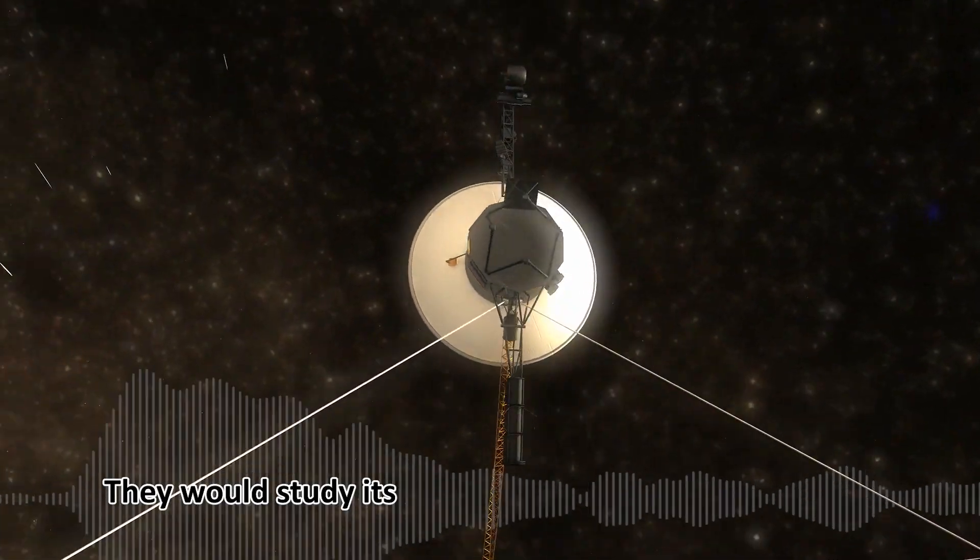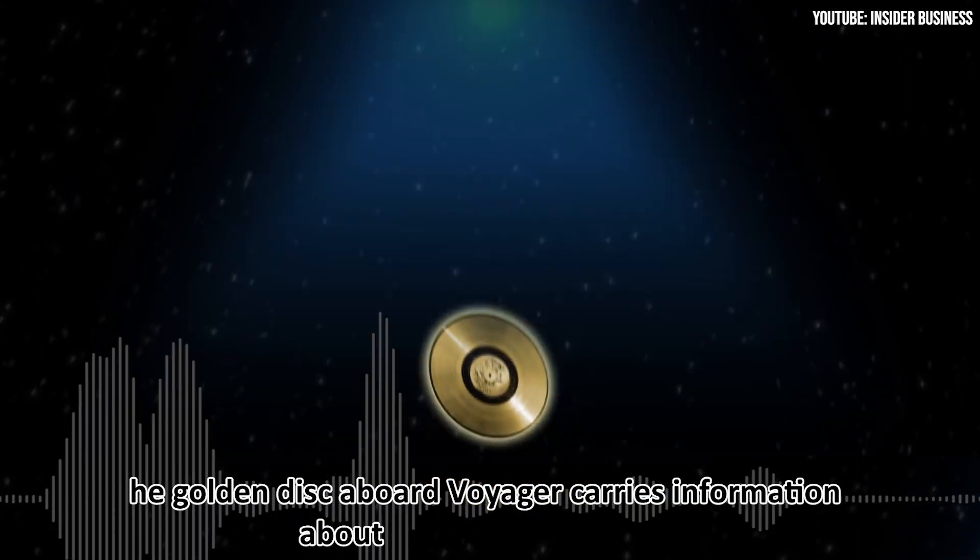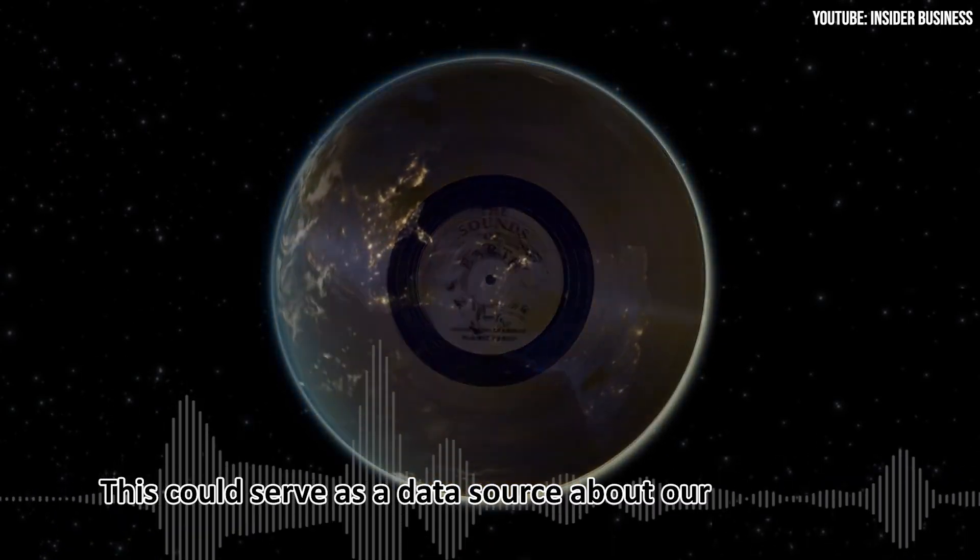Probe analysis: The aliens could conduct a detailed examination of the probe. They would study its structure, materials, and contents. The golden disk aboard Voyager carries information about Earth and humanity. This could serve as a data source about our civilization.